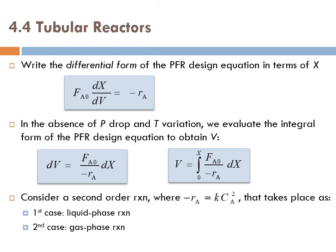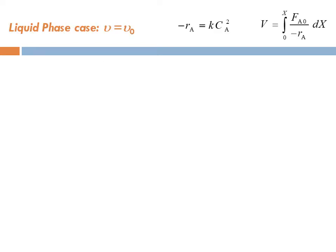Let's consider a second-order reaction where −rA = k·CA². This reaction takes place in two cases: the first case is a liquid phase reaction, and the second case is a gas phase reaction. Let's start with the first case — the liquid phase reaction.